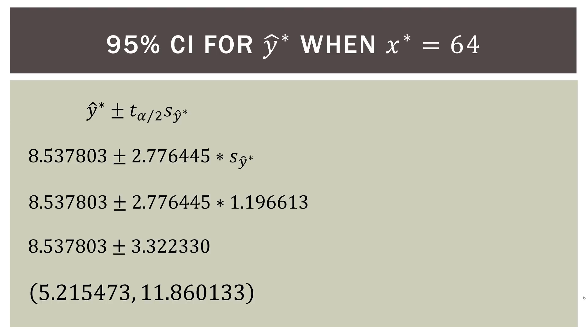So this is our 95% confidence interval for the mean value of y when x, our bill amount, is 64. So we look down here, what we can say is that we are 95% confident that the mean tip amount for a bill of $64 is between $5.22 and $11.86.